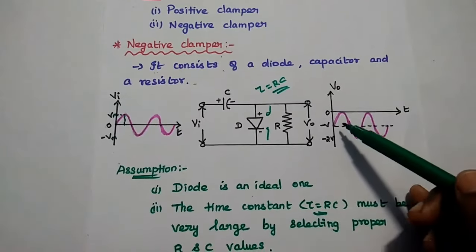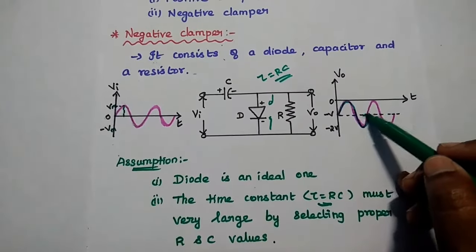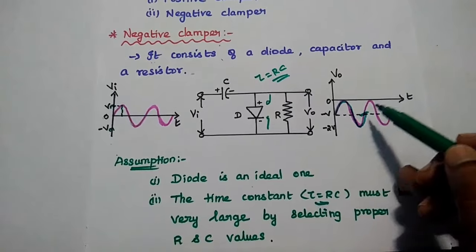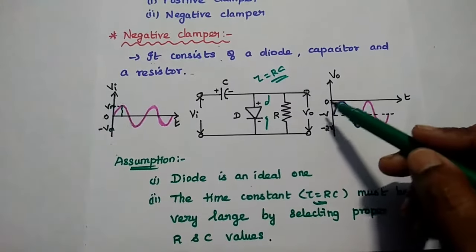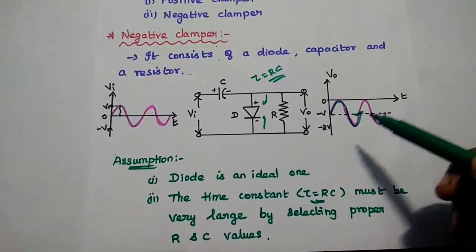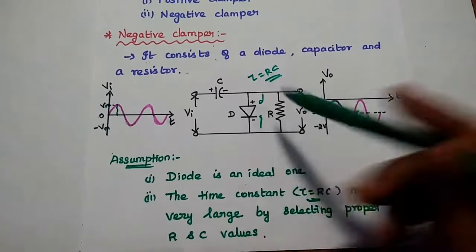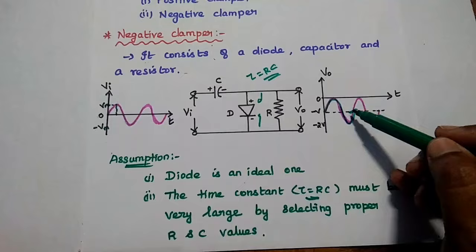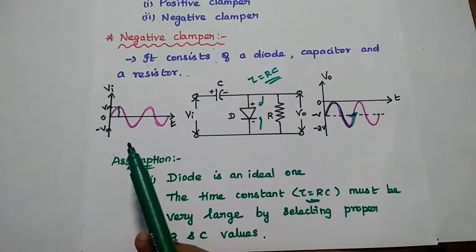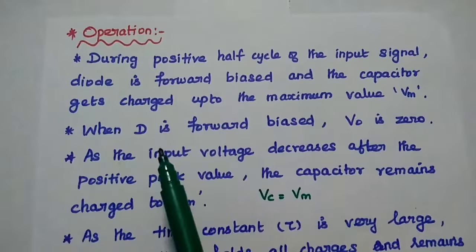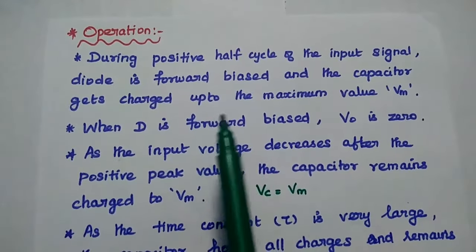At that time we can get the output. In a clamper circuit, the total swing of the output is the same as that of the input. This swing of the output being equal to the swing of the input signal is the overview of the operation of the negative clamper circuit.